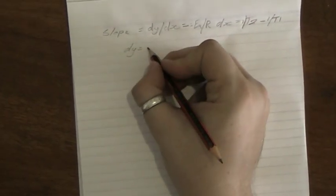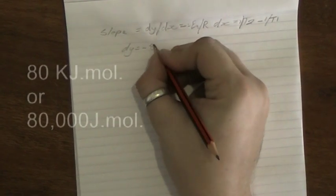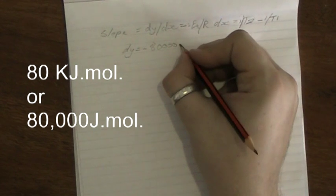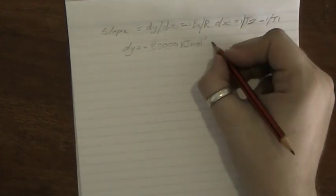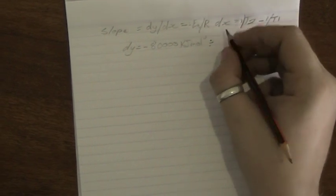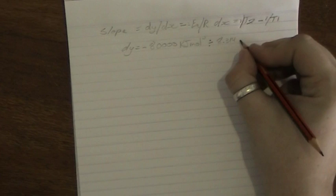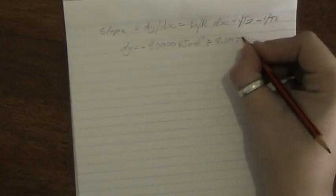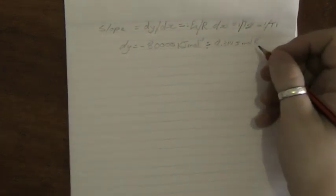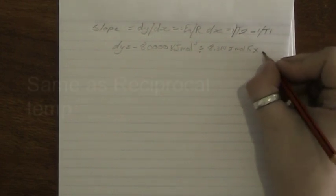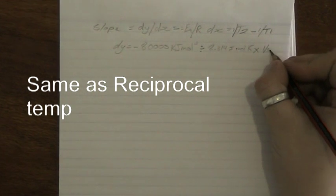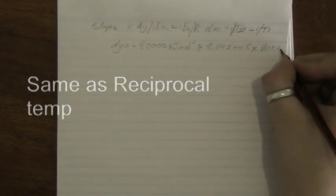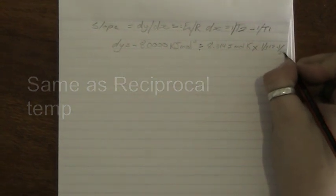dy equals negative activation energy, so it was 80,000 kilojoules per mole, divided by the gas constant, which is 8.314 per joule mole kelvin, times by the two temperatures, which was 1 over 312 minus 1 over 298.